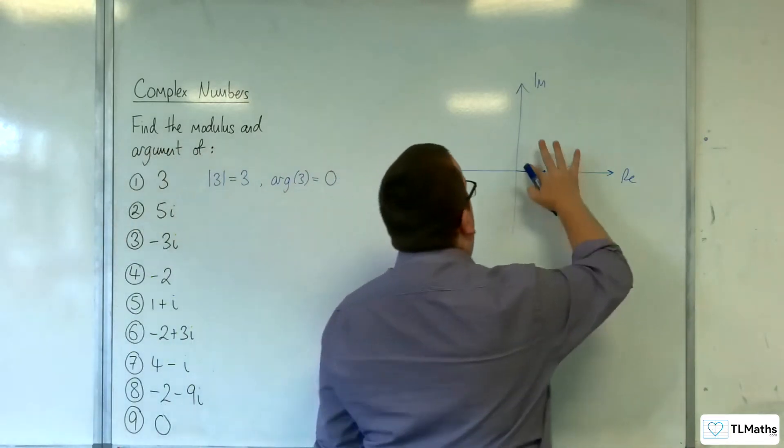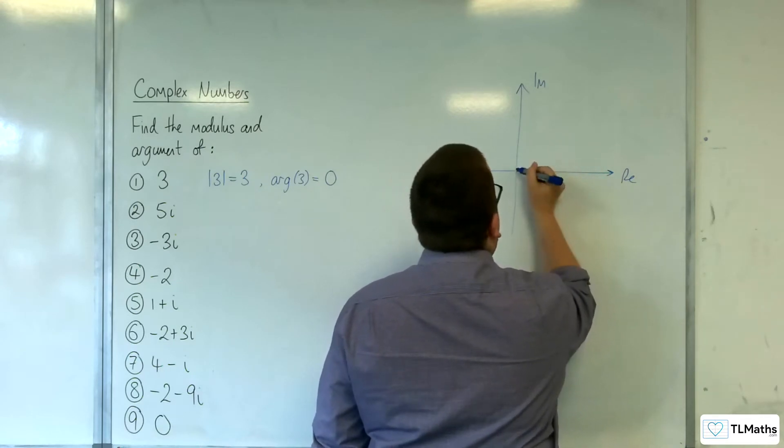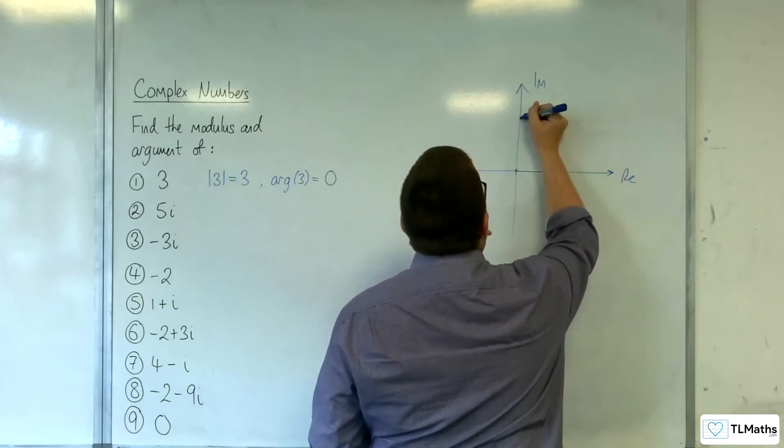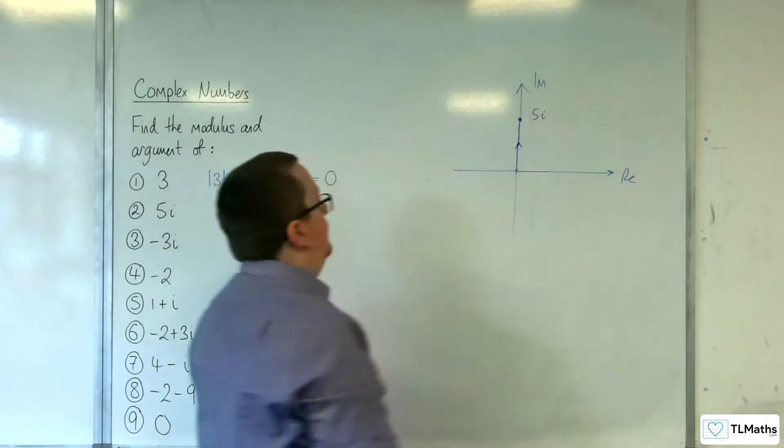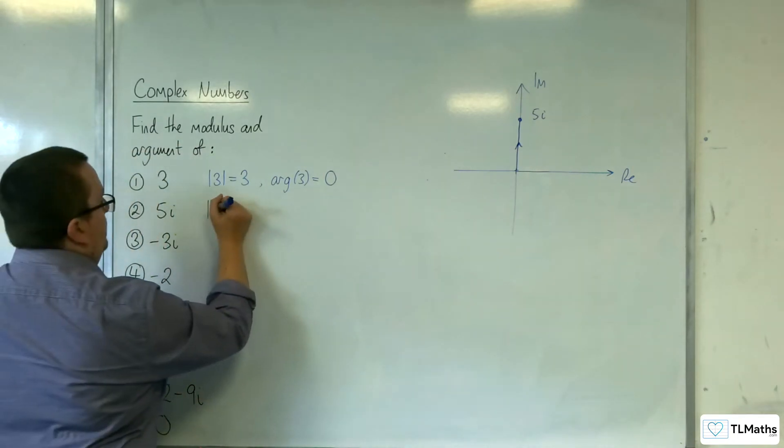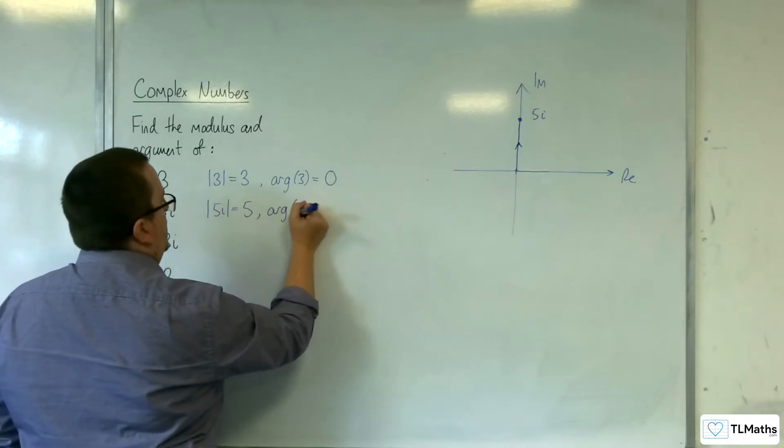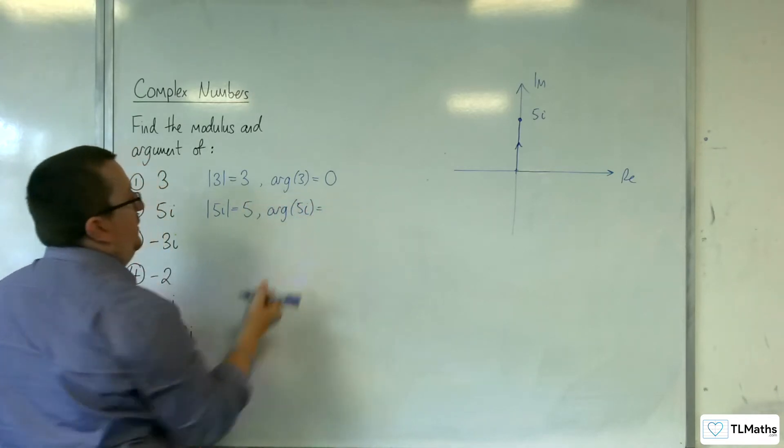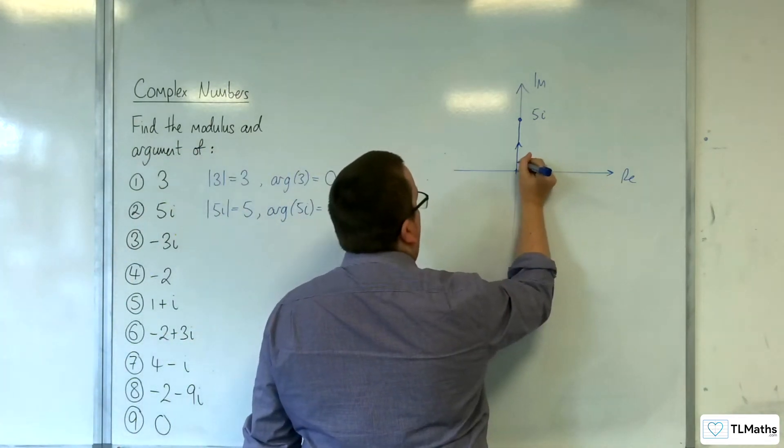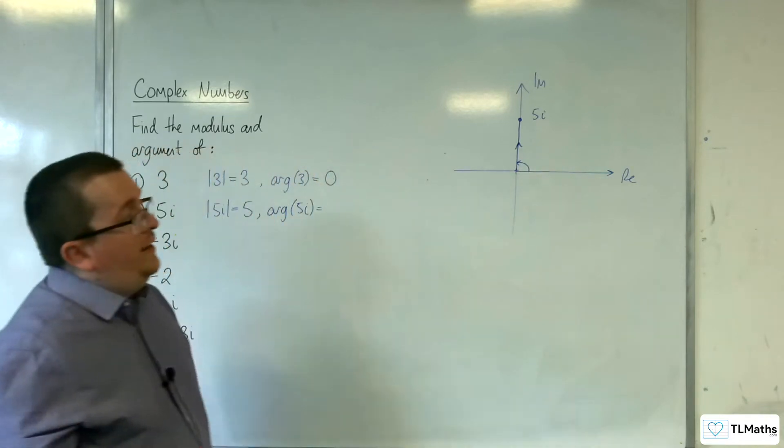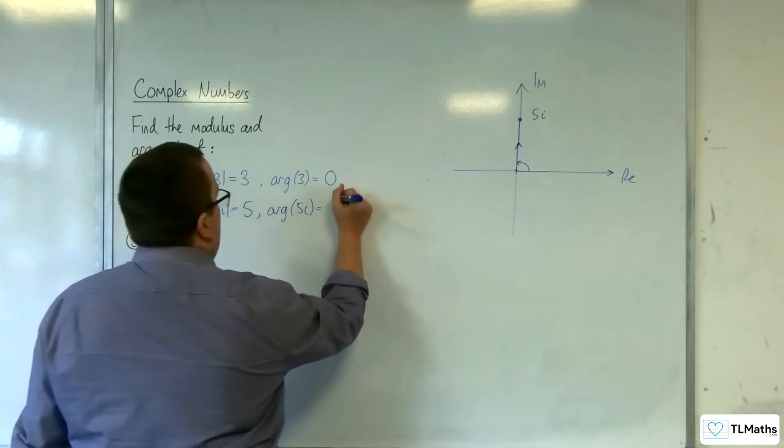Let's take a look at 5i. So 5i would be up here. What is its length? The distance it is away from the origin is just going to be 5. The argument of 5i is the angle that it is making with the positive real axis, going that way round. And of course, that is π over 2, 90 degrees. So that's π over 2.